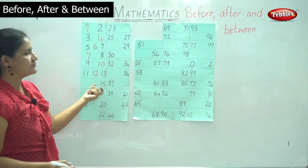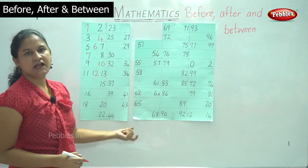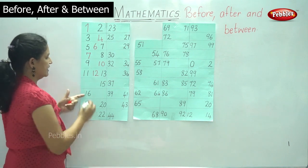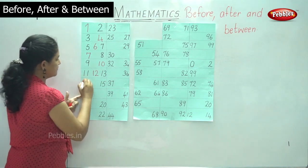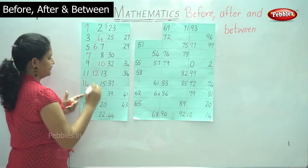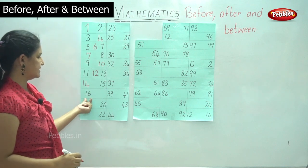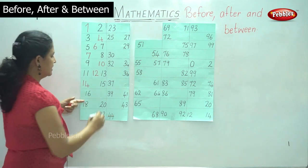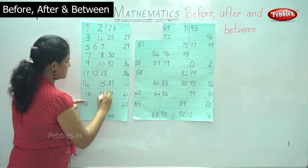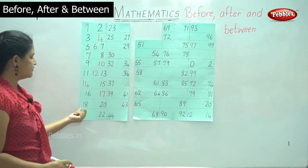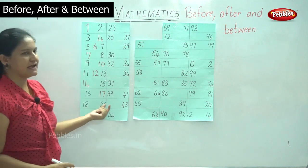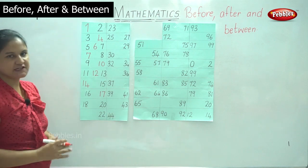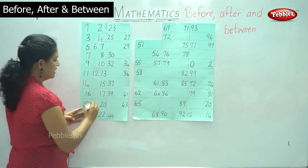We have number fifteen and we want to know what number comes before number fifteen — it is number fourteen. Then we have number sixteen, and what comes after sixteen? It is number seventeen. Then we have numbers eighteen and twenty, and what comes between eighteen and twenty is number nineteen.